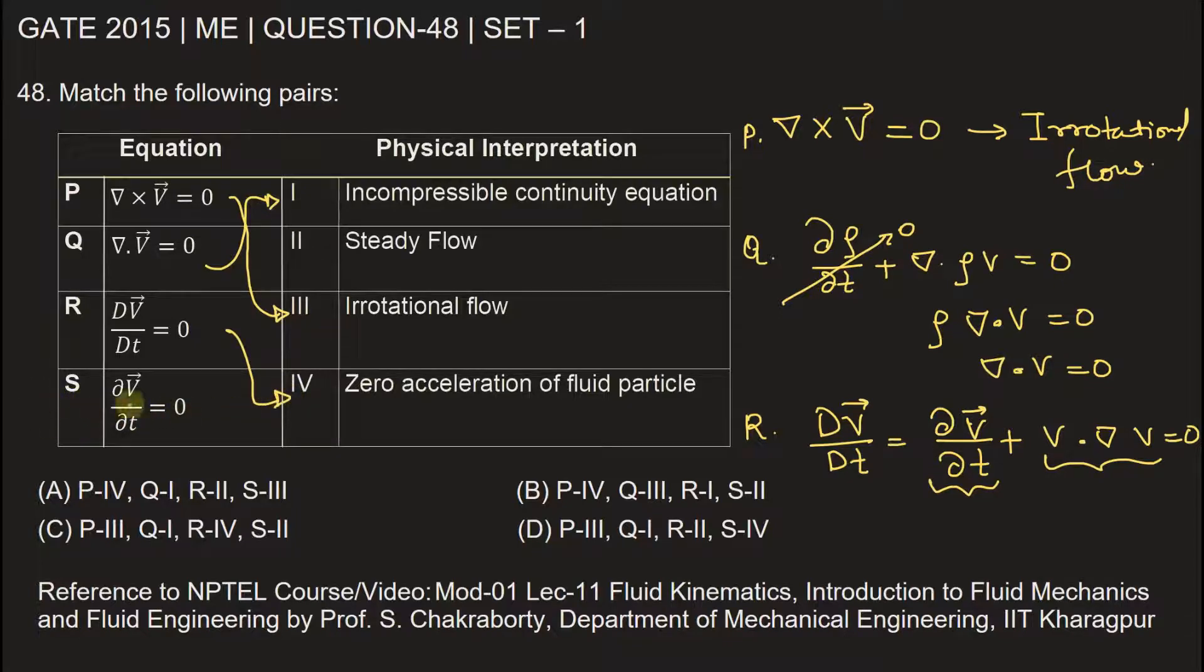Now S, that is ∂V/∂t, this represents the steady flow. Whenever the change in velocity with respect to time is zero, then we say the flow is steady. So fourth will match with two.